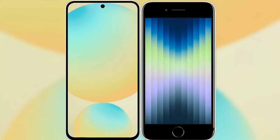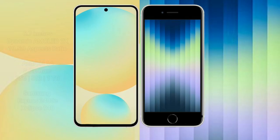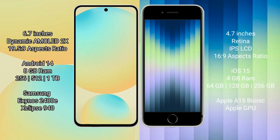I will compare the new Samsung Galaxy S24 FE with iPhone SE. The Samsung Galaxy S24 FE features a 6.7-inch dynamic AMOLED display with an aspect ratio of 19.5:9. The iPhone SE has a 4.7-inch Retina IPS LCD display with an aspect ratio of 16:9.